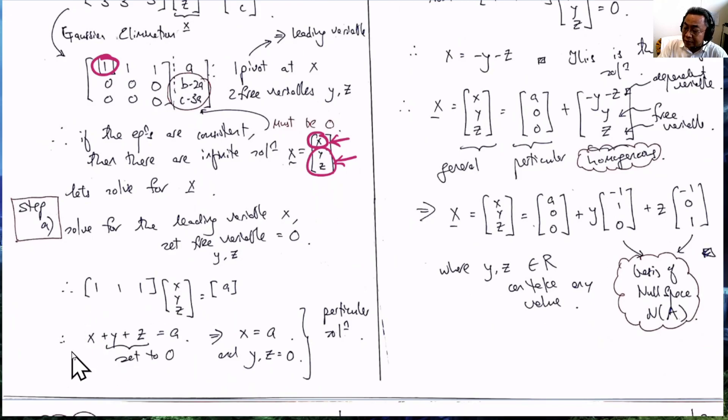We will get 1 by 1 on the right hand side, which is the value A. So X plus Y plus Z should have to be set to be equal to A.